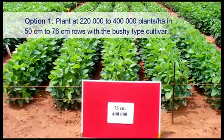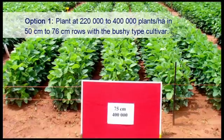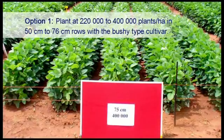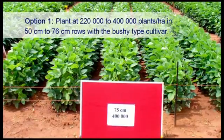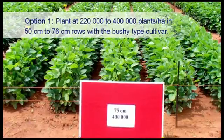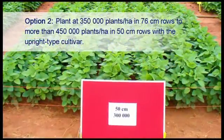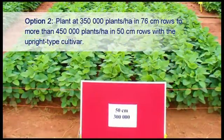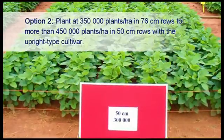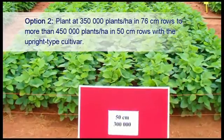Certain bushy type cultivars can be planted in 76 cm rows with a plant density as low as 220,000 plants per hectare, while others can be planted up to 400,000 plants per hectare in 50 cm rows. Upright type cultivars can be planted at a density of 350,000 plants per hectare in 76 cm rows and up to 450,000 and more in 50 cm rows.